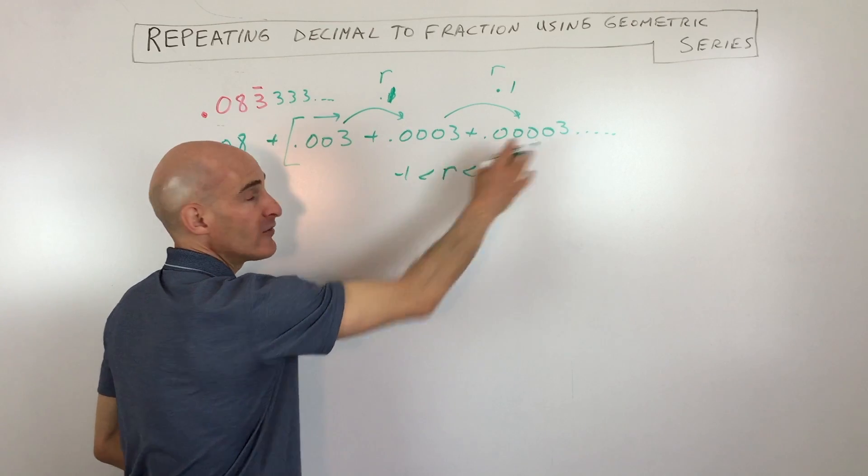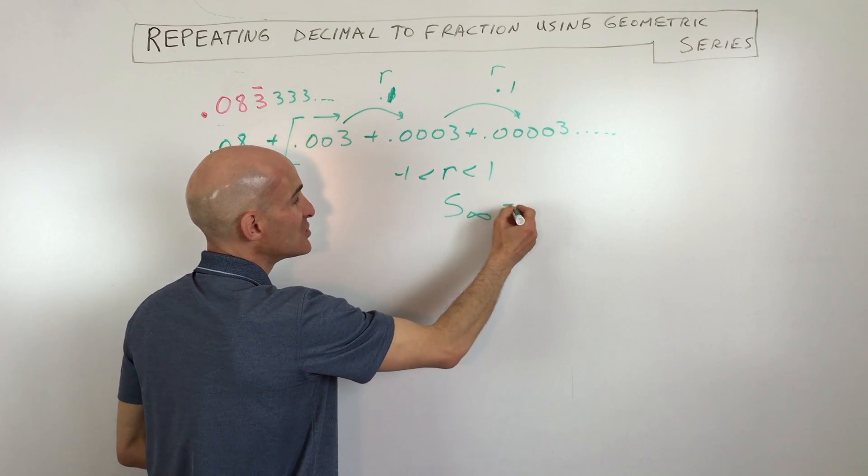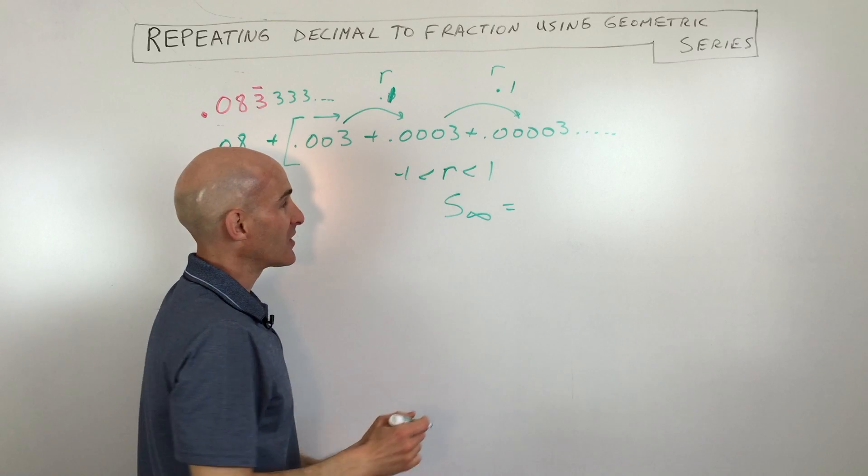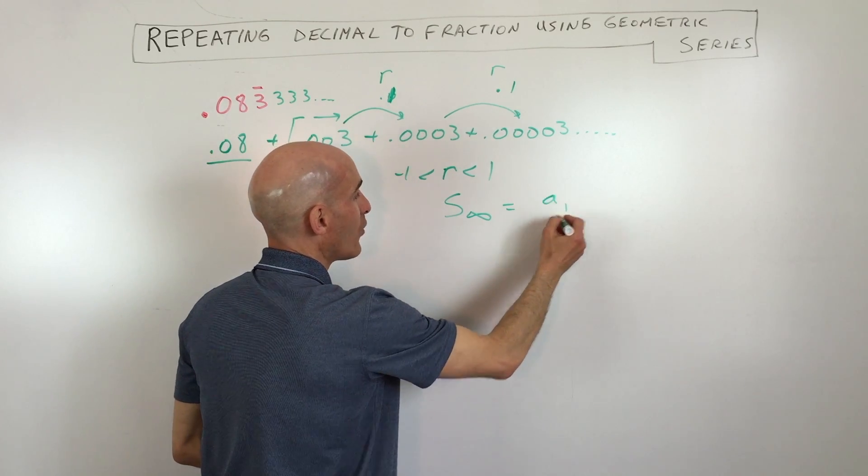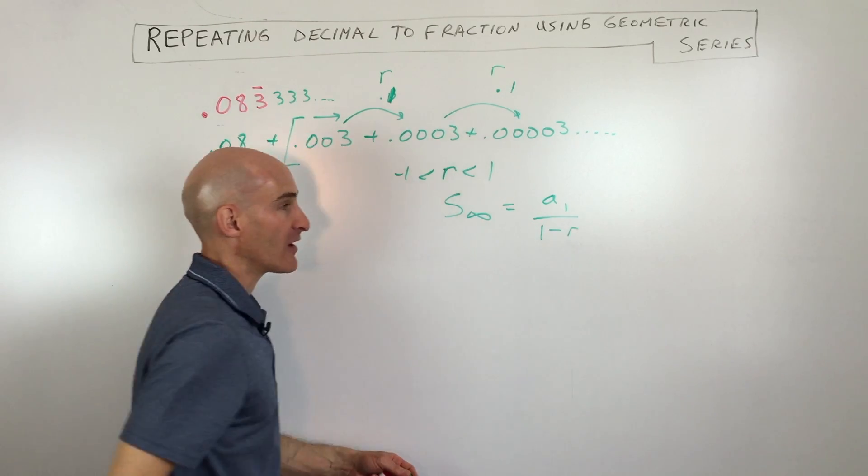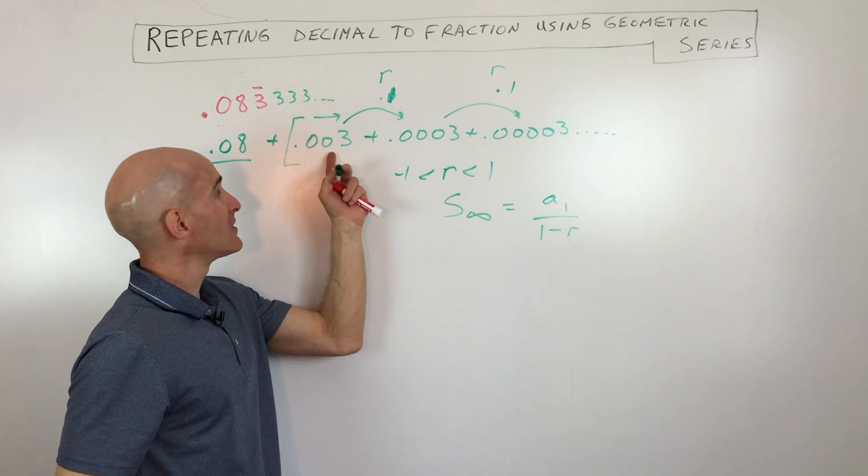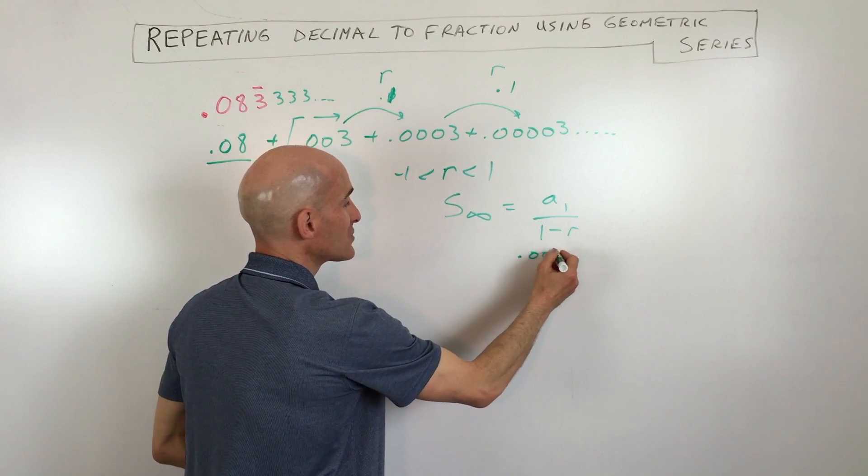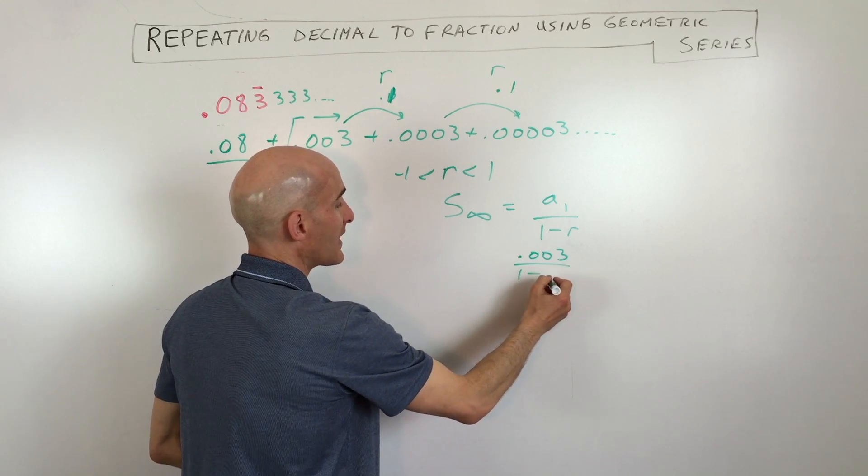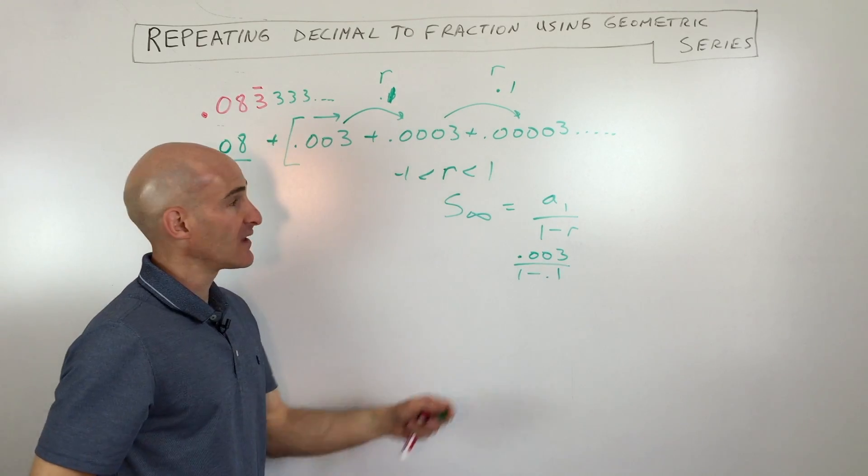We can add up all these terms using the infinite geometric series sum formula, which is a1 over 1 minus r. So the first term is 0.003. So 0.003 over 1 minus 0.1. That's our ratio.